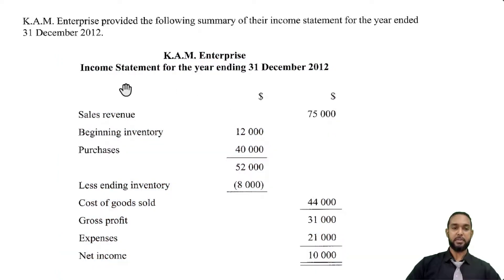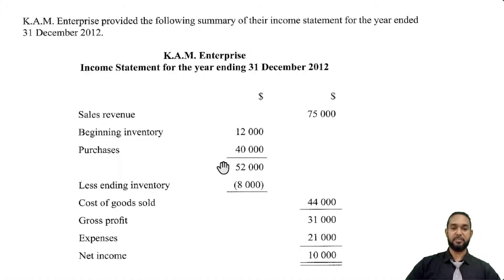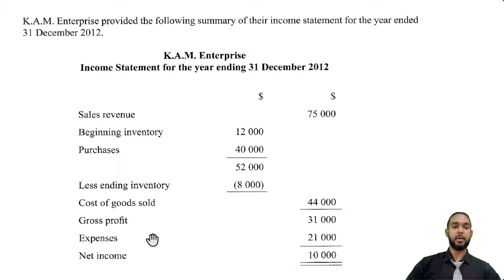KAM Enterprise income statement for the year ending 31st December 2012. Sales revenue 75,000. Beginning inventory 12, purchases 40, which means cost of goods available is 52. Less ending inventory of 8, giving us cost of goods of 44. 44 subtracted from 75 gives us a gross profit of 31. Expenses total 21,000. Net income is 10,000.